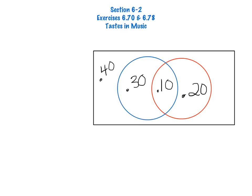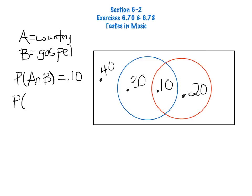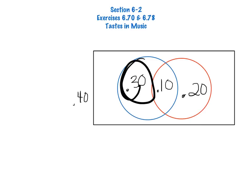If I let A represent those who like country music, and B represent those who like gospel music, then there are some statements that I can make here. The probability of A intersect B is .1. This is the probability that a college student likes both.